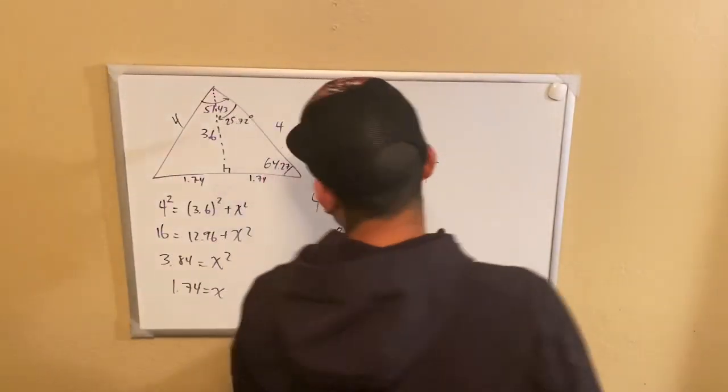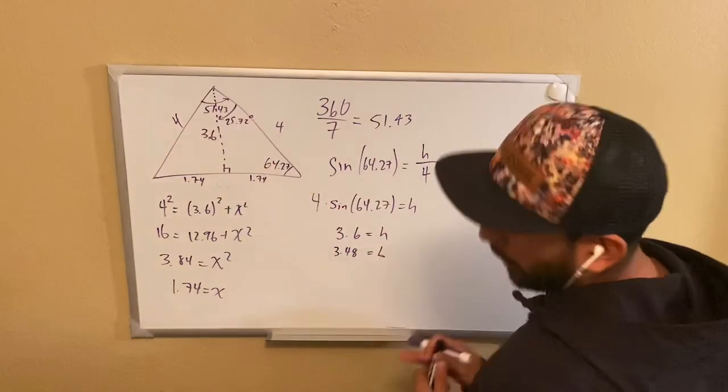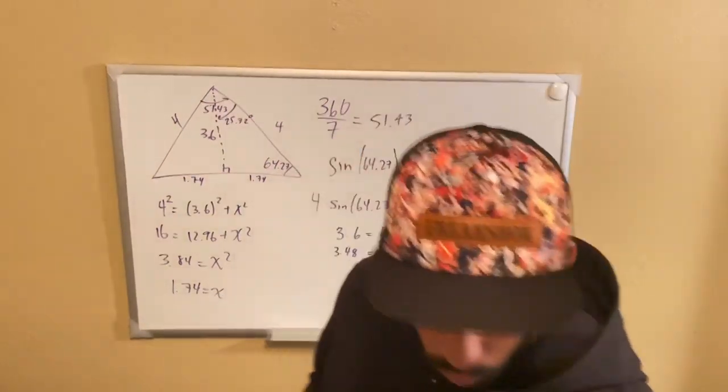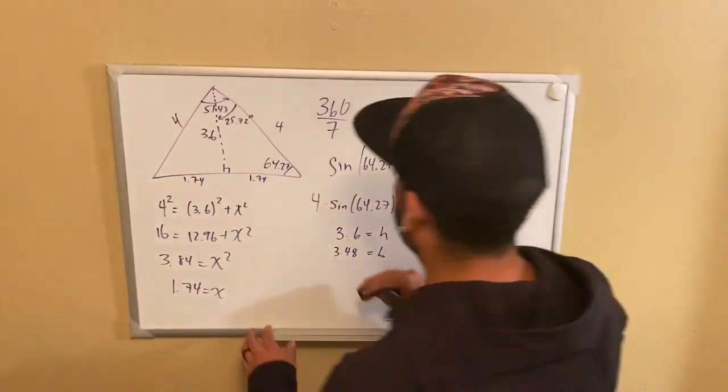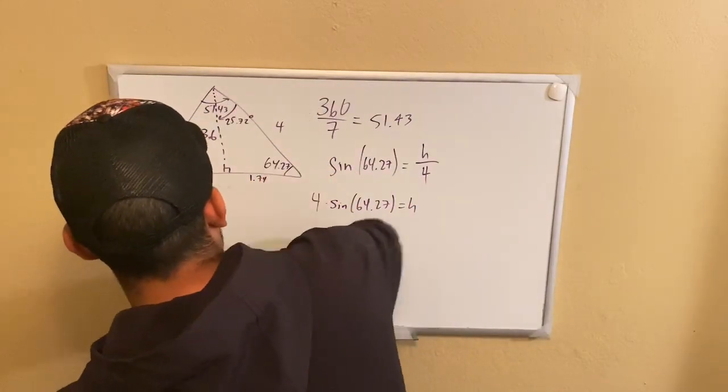Now, we have all the values needed to find the area of this triangle. How do you find the area of the triangle? One half the base times the height. So let's go ahead and do that.